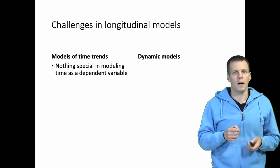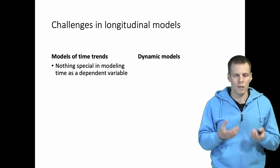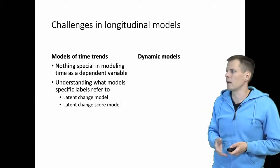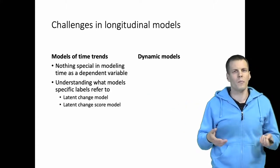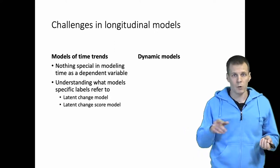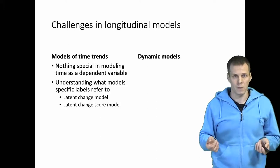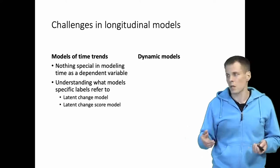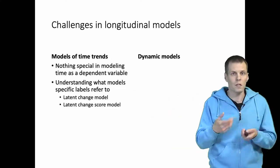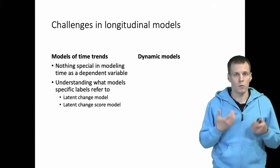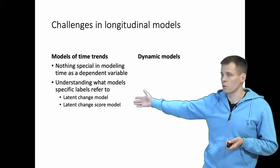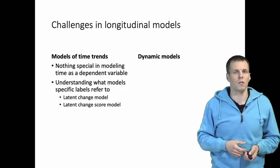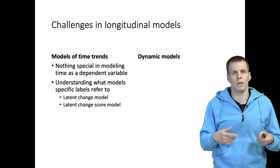what makes this a bit more complicated to understand or requires some amount of studying is that there are some special labels given to special cases. For example, if we have a latent change model. Latent change model basically refers to a model where we have a time trend that is linear and the slope and the intercept vary between the different observations. So that's basically just a random intercept model of time, but for some reason we refer to it as a latent change model and you have to just know this terminology. If it wasn't for the terminology, we could just apply multi-level modeling or structural equation models like we do to any other data set, and there wouldn't be anything special to know about how to model time.